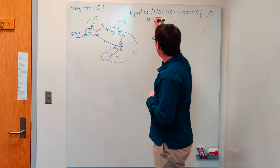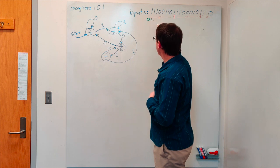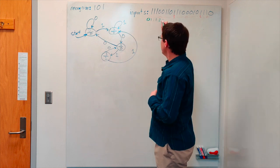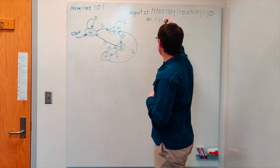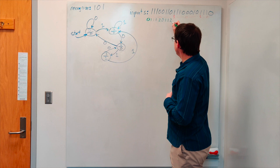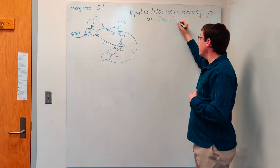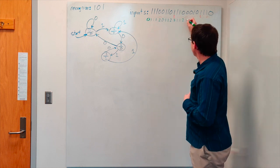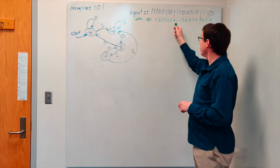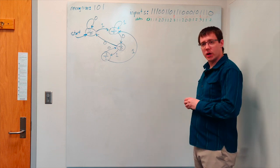If we trace what state our finite state machine is in as it goes through this input, we should see that it will be in state three only in the two cases where we wanted to output a one. We start in state zero, and if we see a one we transition to state one. If we see another one, we stay in state one. If we're in state one and we see a zero, that takes us to state two. But seeing a zero from state two takes us back to our start state. If we see a one we go to state one, and then stay in state one. Now we make progress to state two, and from state two seeing a one we end up in state three. From state three, if we see a one we go to state one. And so we see that our finite state machine only ends up in state three, and therefore only outputs one, in the cases where we've seen one, zero, one most recently.